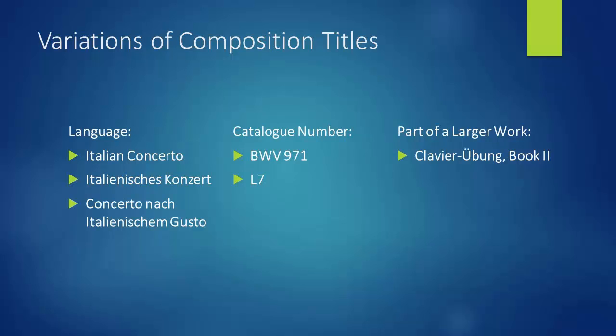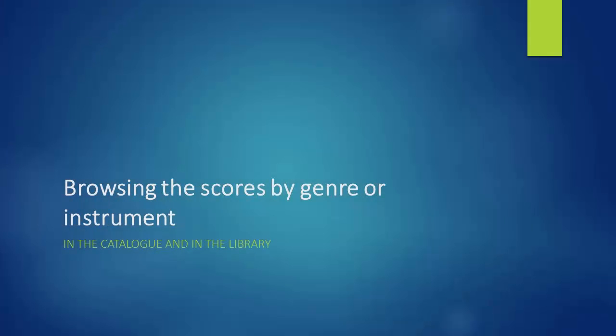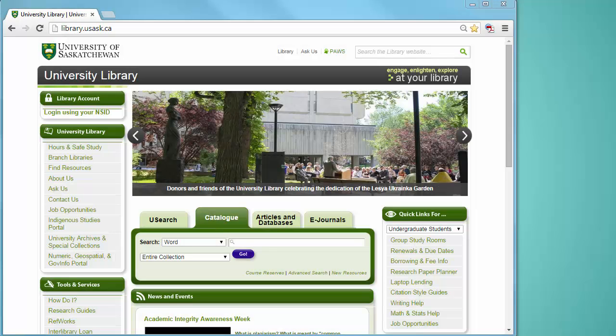One of the limitations of the library catalog is that it takes search terms literally. It won't be able to interpret your search to include items that don't have the exact words or phrase that you've entered. Another type of search that you might be interested in is to search for a group of compositions by instrument or genre.